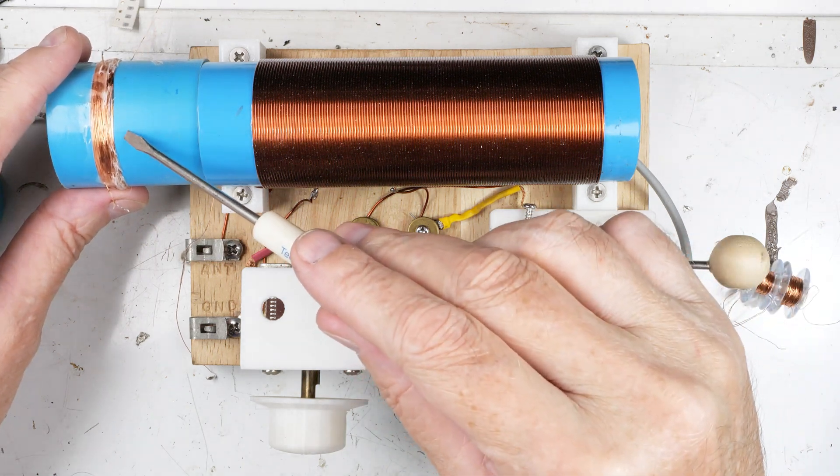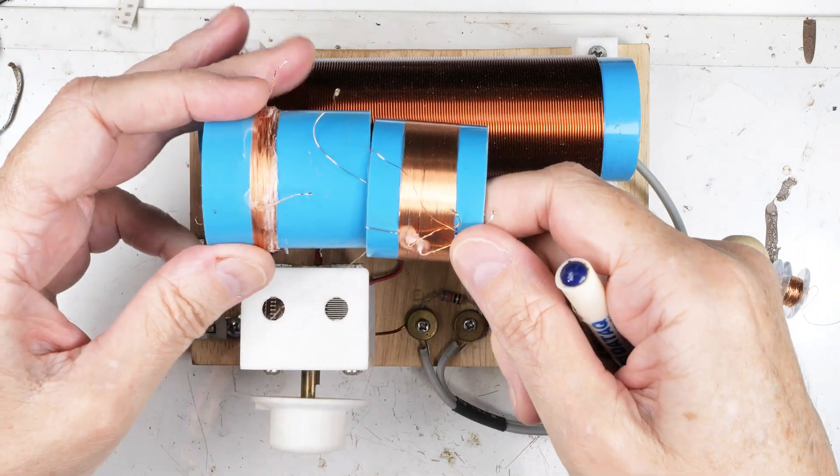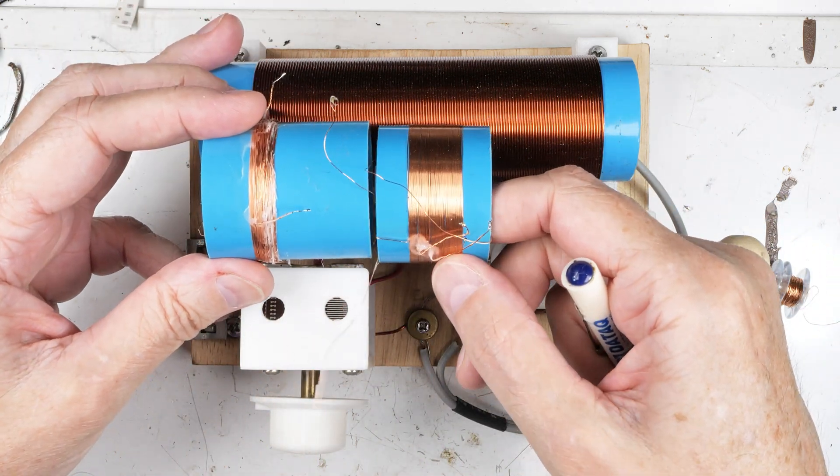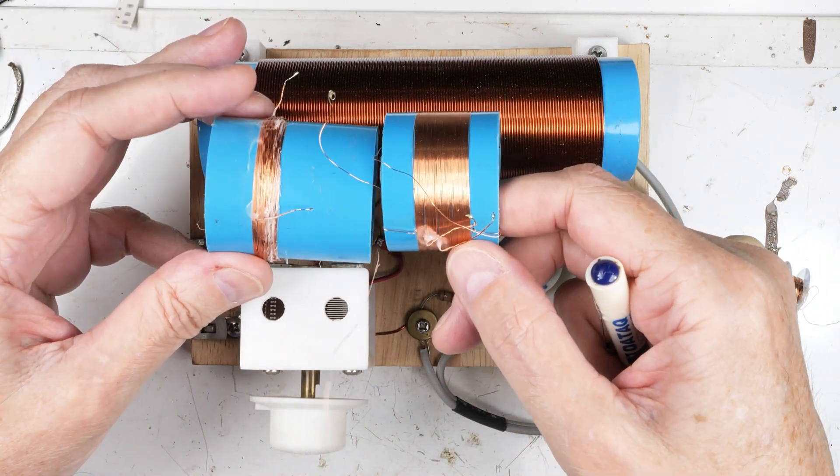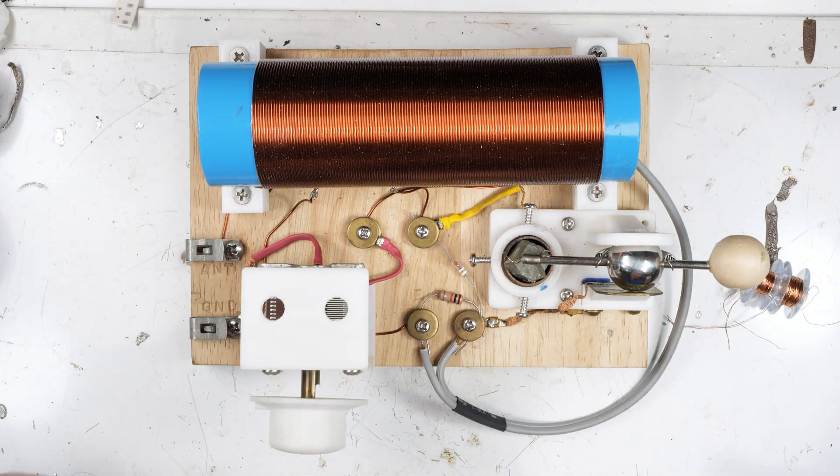And this one worked plus or minus the same as the straight wound. So we eliminated wire size. We eliminated the scatter versus the straight windings. And finally, the only thing left to test is the core diameter.